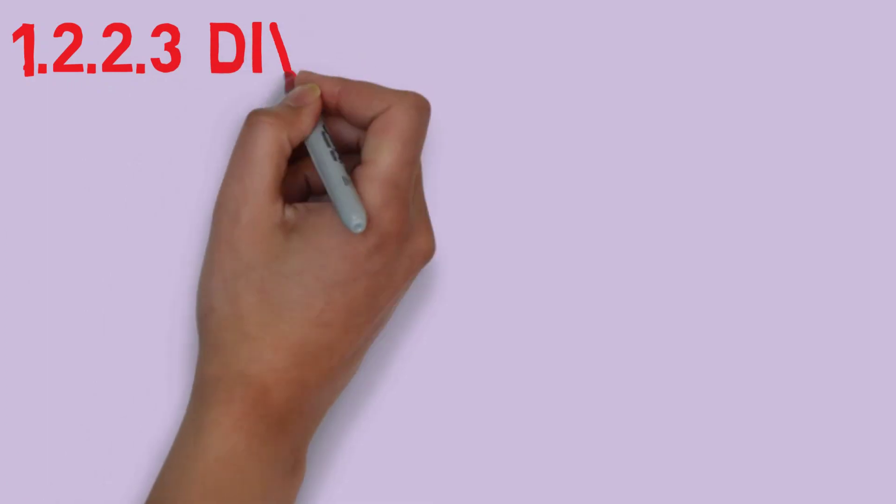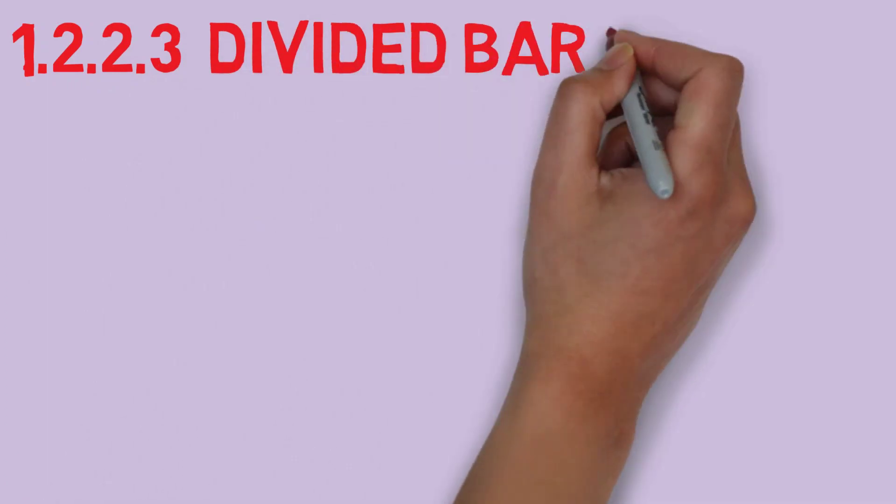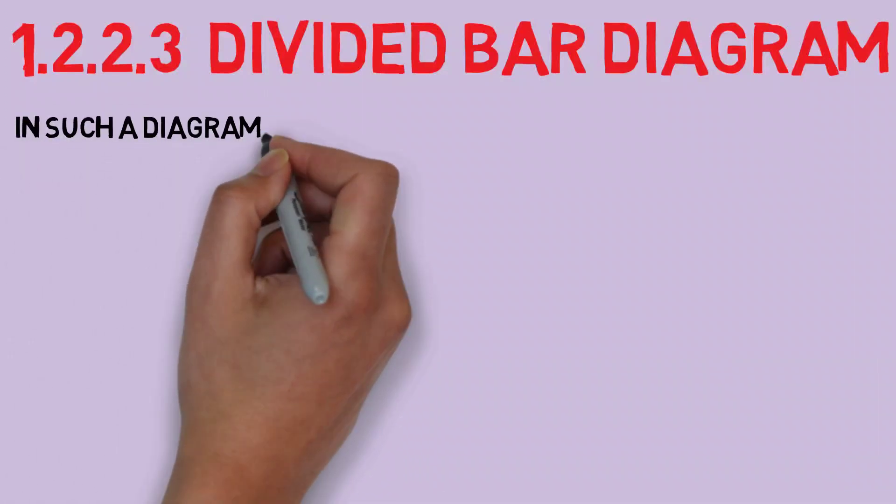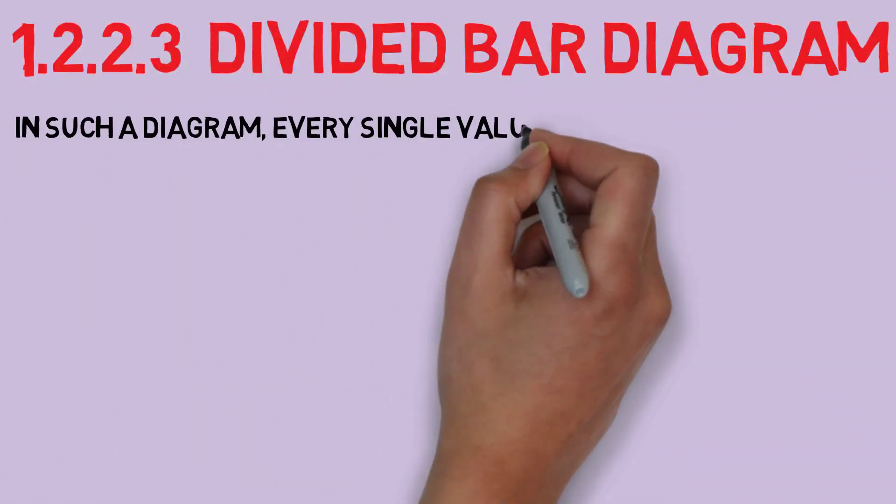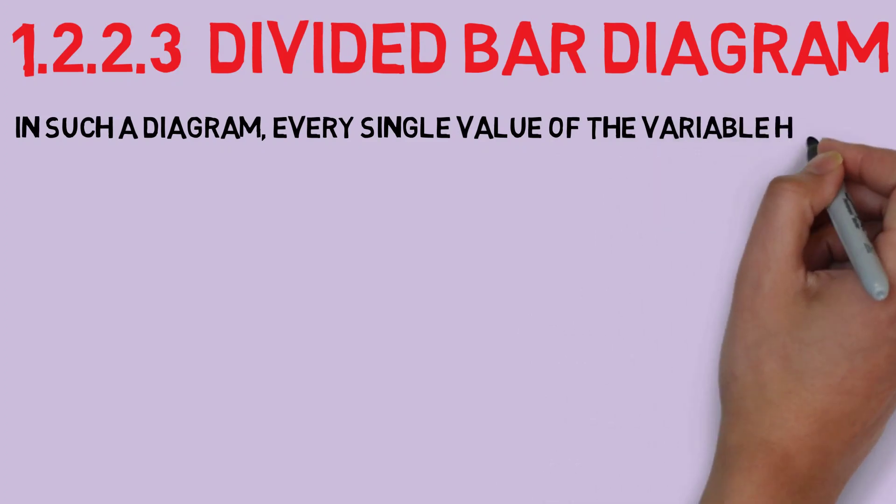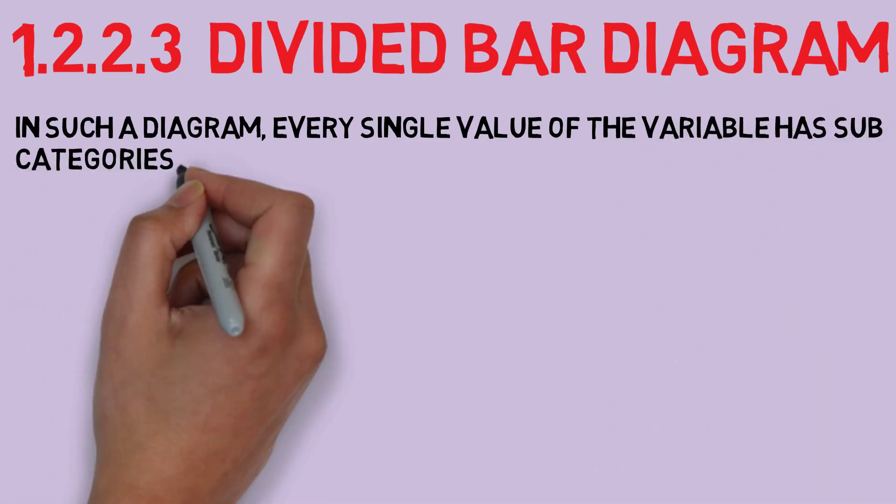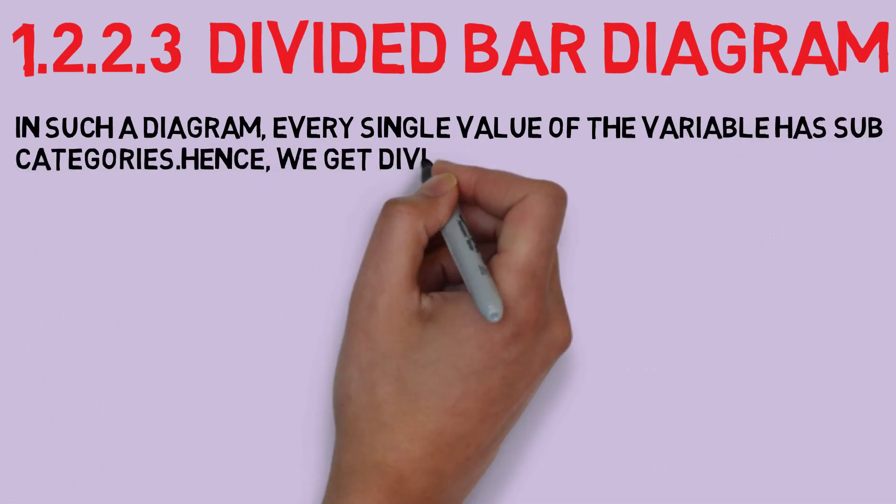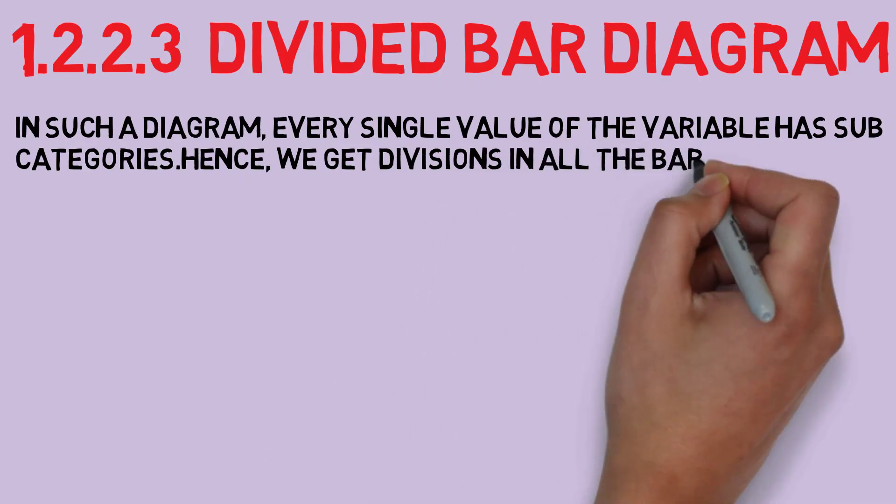Number three: divided bar diagram. In a divided bar diagram, a bar is divided into several segments to represent a set of quantities according to the different portions of total amount.